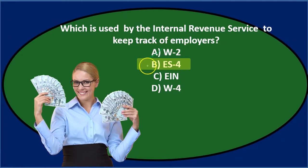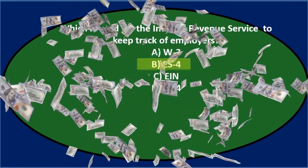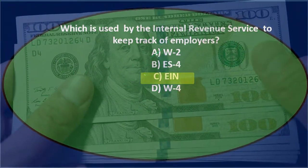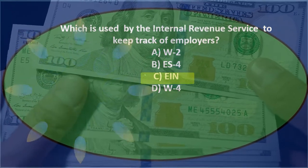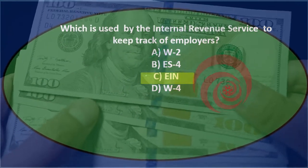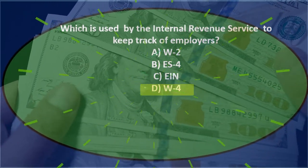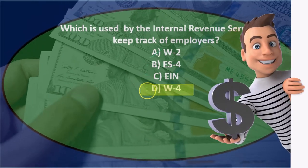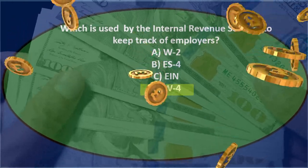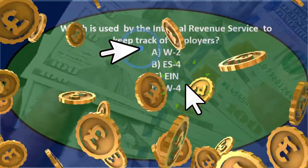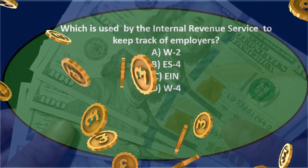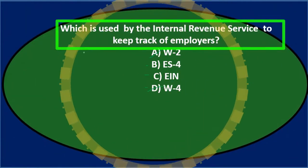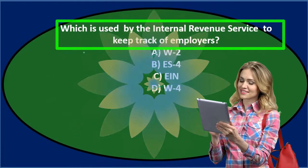B, the ES-4 — I'll keep that for now; not quite sure about that one. C says the EIN number — that might sound familiar, so we'll keep that. D says the W-4, which is an employee form — the one the employee fills out to track employees, not really the employer. So we can probably eliminate A and D, and look at B and C: the ES-4 and the EIN.